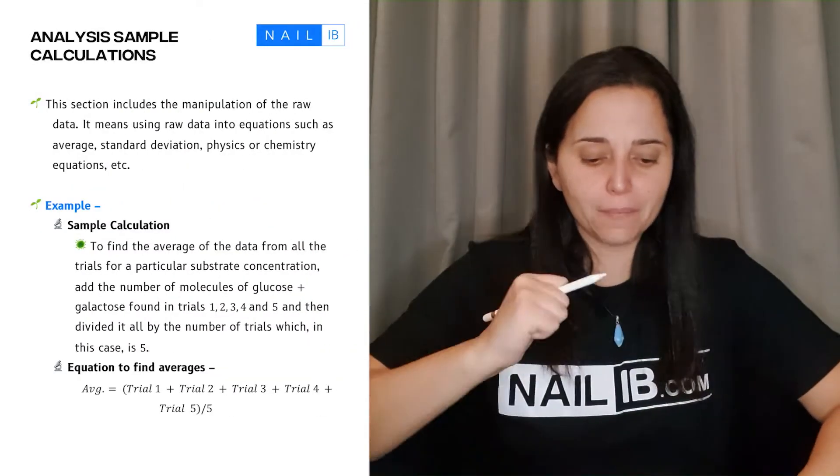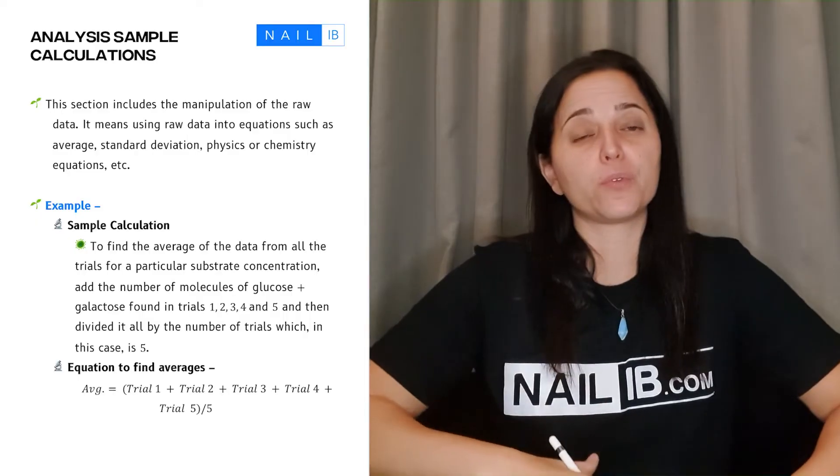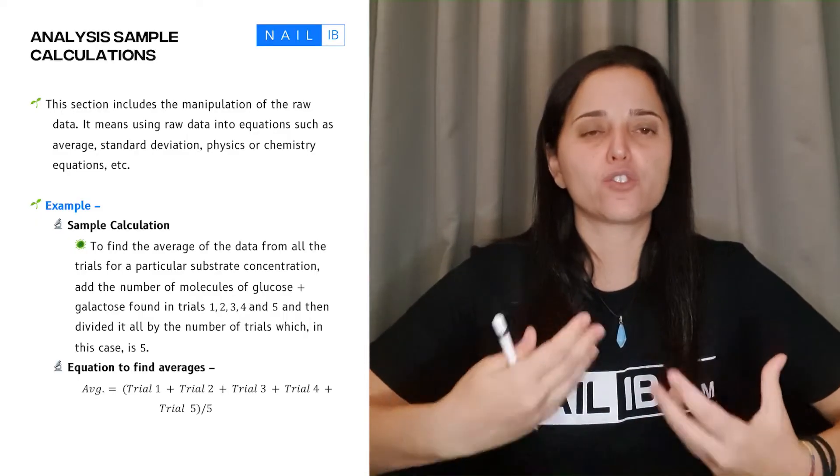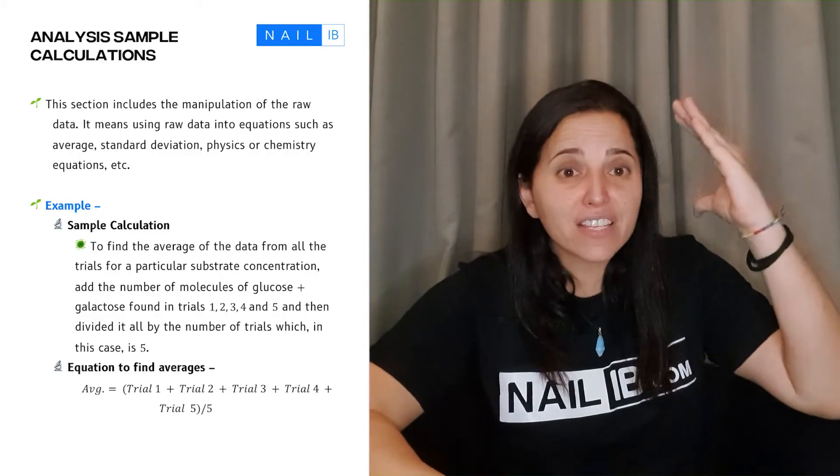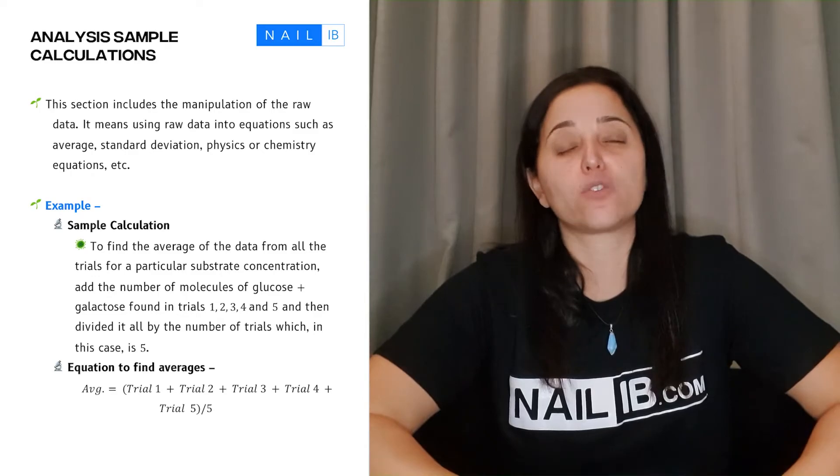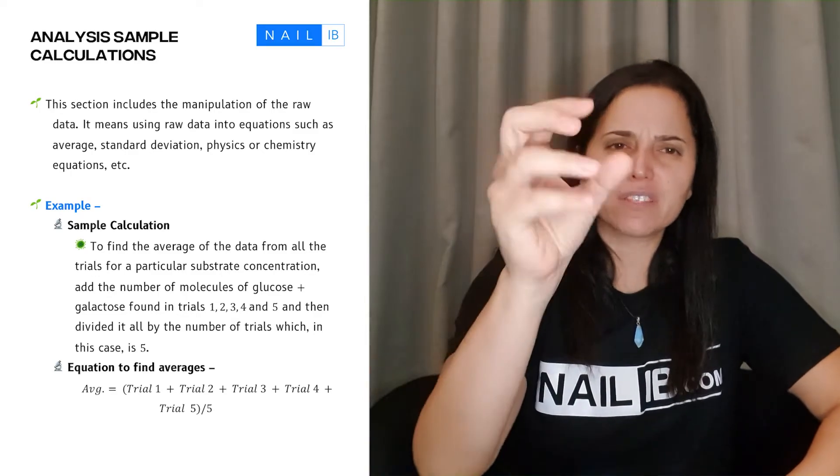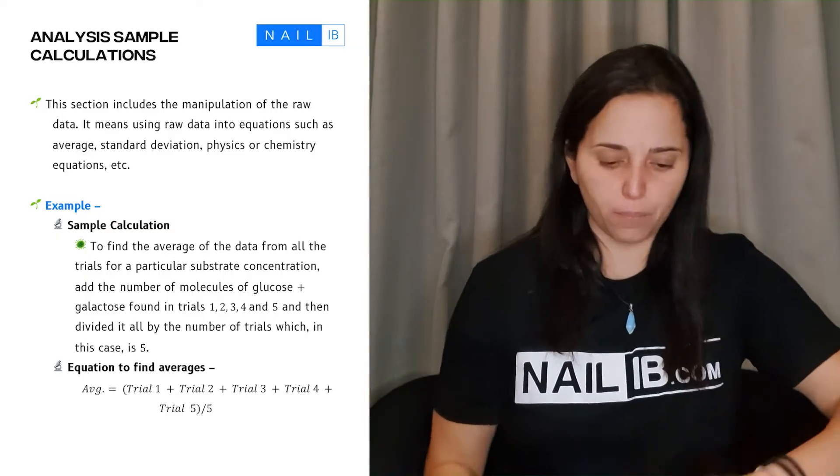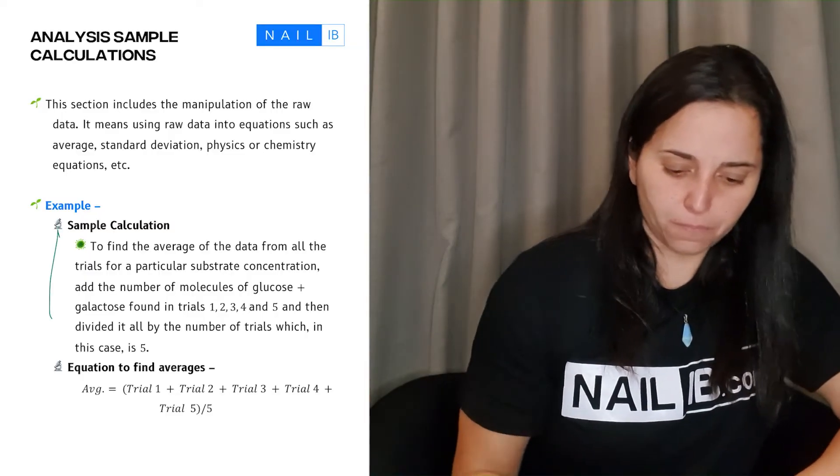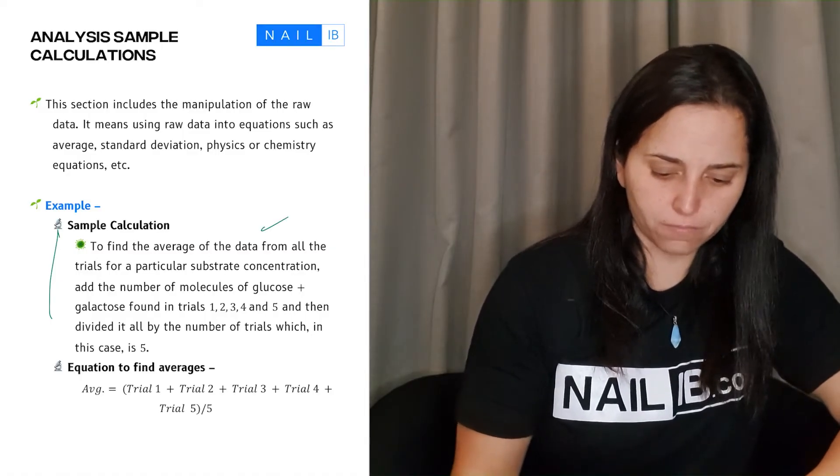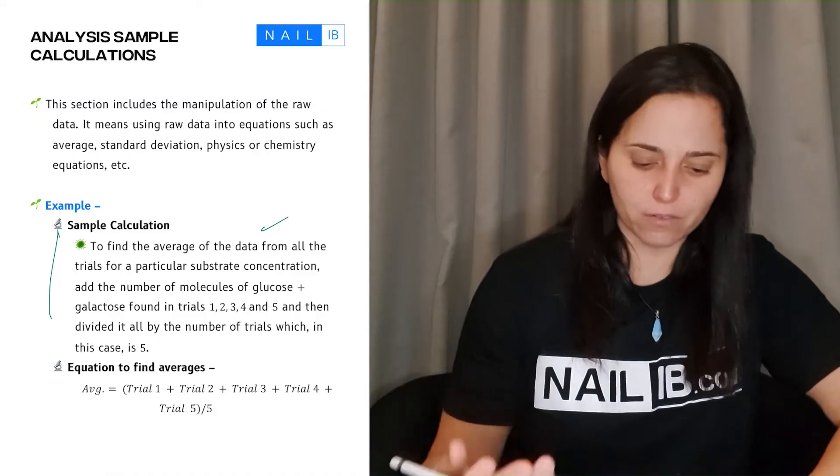So with that in mind, let's give examples of what comes after the overview. It is the calculations. You have to show the calculations. Do you have to do every single calculation? No. You have to give a little bit of a sample of what it looks like to calculate an average, a little bit of a sample of how to calculate the standard deviation and so forth. If you look here at an example, look what the student has written: to find the average data from all the trials of the particular substrate concentration.